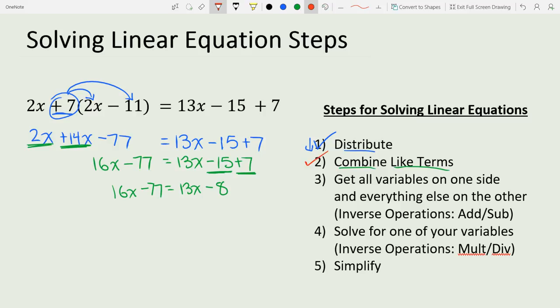Now that we're done combining like terms, we want to get all variables on one side and everything else on the other using inverse operations of addition and subtraction. To get rid of this 13x, we do the opposite: subtract 13x from both sides. I'm putting it under this 16x because these are like terms. 16x minus 13x is 3x, and we drop everything else down.